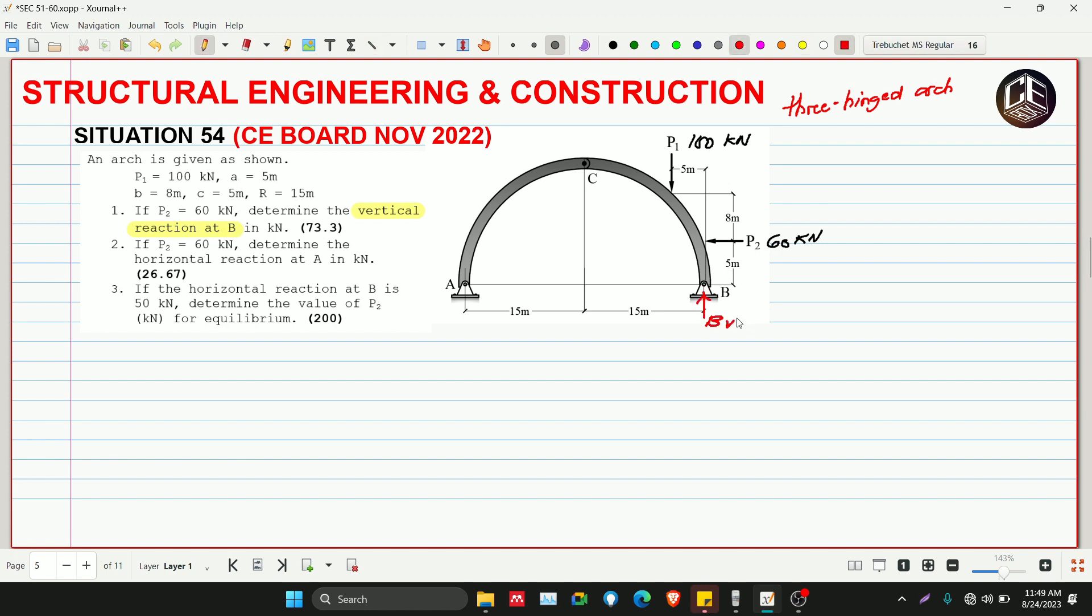Let's draw all reactions: BV, BH, AH, and AV. Why is this easy? Since support A and B are at the same level, we can take moments at either point. When we extend the horizontal components at A and B and take moments at A or B, the moment arm of AH and BH is zero, leaving only the vertical forces. Taking summation of moment at A equals zero, clockwise is positive: negative BV times 30 meters, plus 100 kilonewtons times 25 meters.